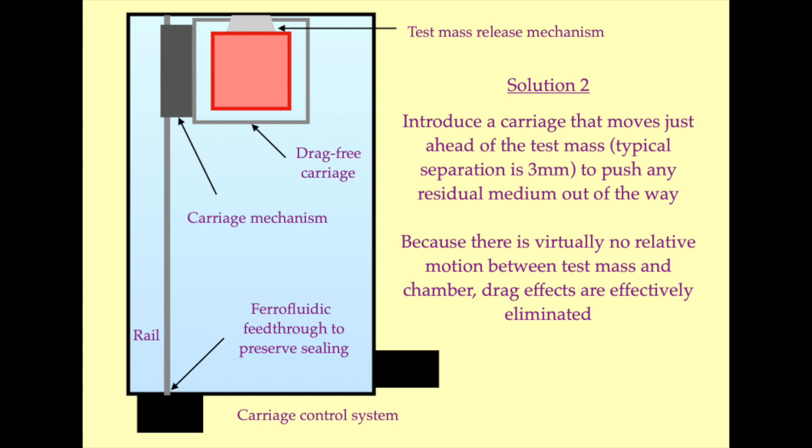But this is not the only countermeasure we can employ. We can also place the test mass inside a carriage. The carriage will be pulled down mechanically ahead of the test mass and will push any residual medium out of the way. The descent of the carriage will be adjusted by a control mechanism in response to the position of the test mass, which will be detected optically. This carriage will thus protect the test mass from any drag effects, but will also provide a mechanism by which the test mass can be transported to its drop point.